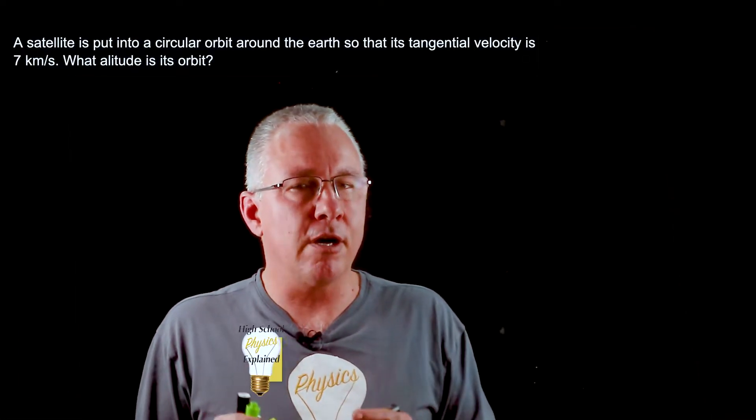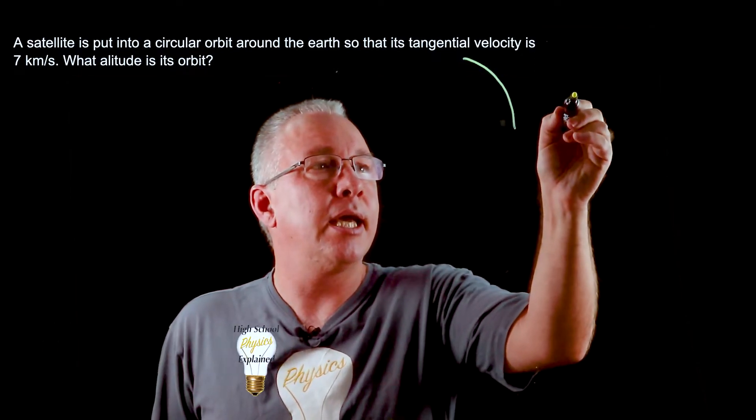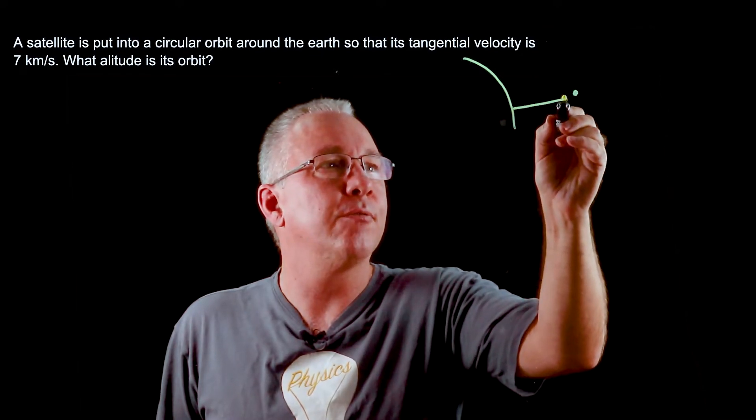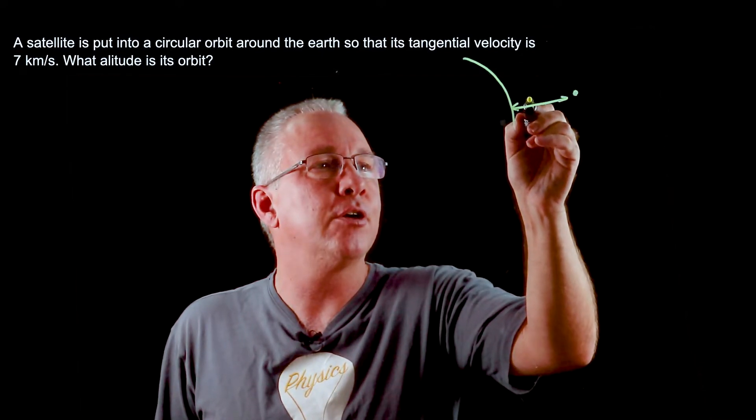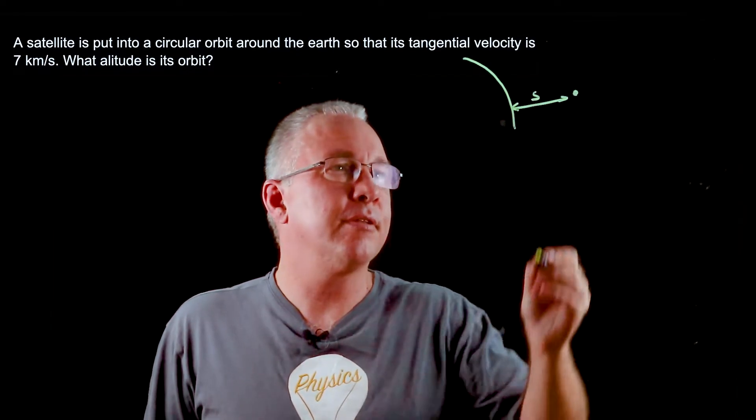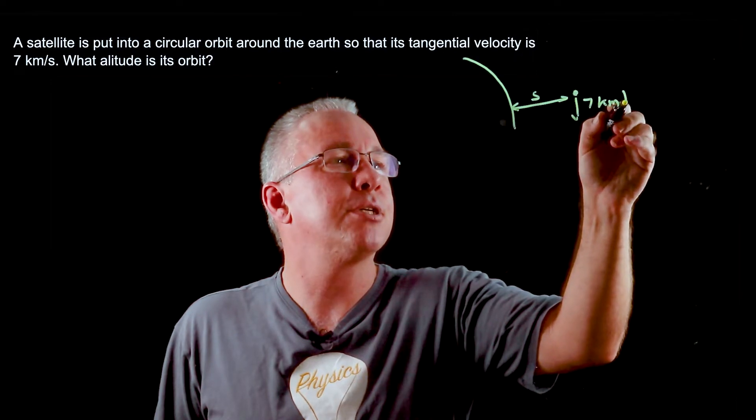Here we have a question involving orbital velocity. We have a satellite that is in orbit and we want to know what its altitude is relative to the surface of the earth. So I'm going to call this s. And we're also told the velocity of my satellite is 7 kilometers per second.